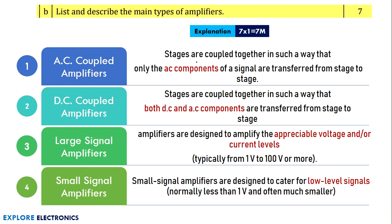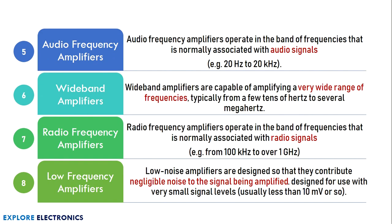The next question is on amplifiers — list and describe the main types of amplifiers. 'List' means we keep listing: AC coupled amplifier, DC coupled amplifier, large signal amplifier, small signal amplifier, and others. If asked to describe, a brief explanation is required. Since it is for seven marks, at least five to seven amplifiers need to be written, with one mark allocated for each amplifier covering both listing and description.